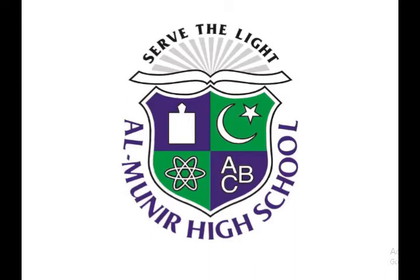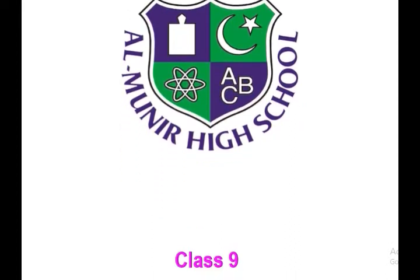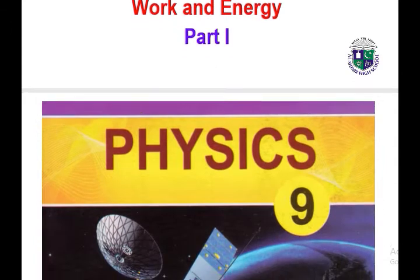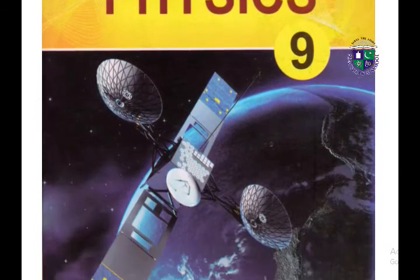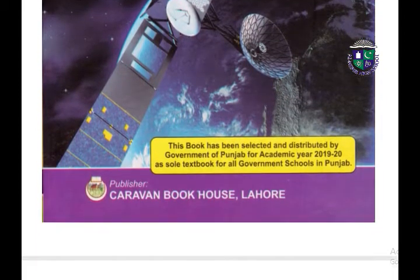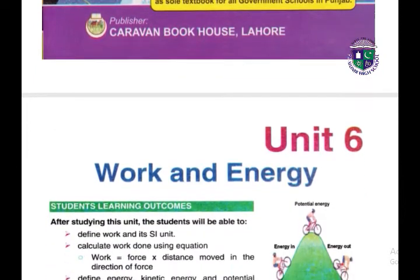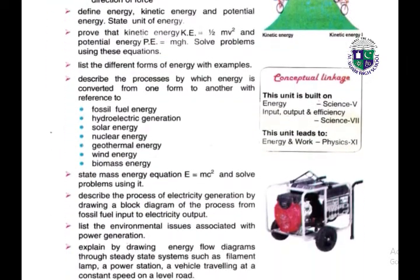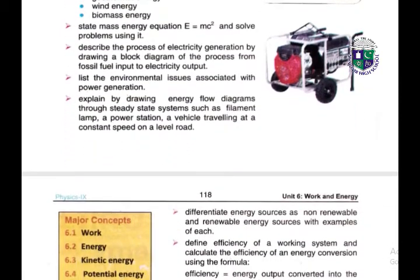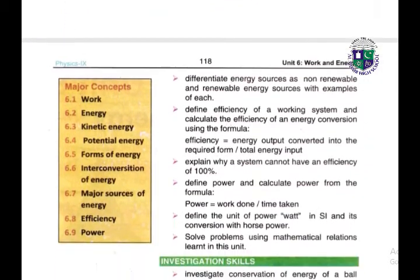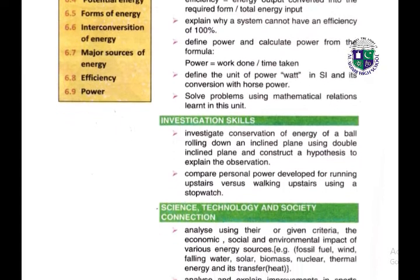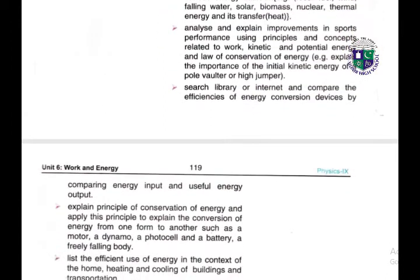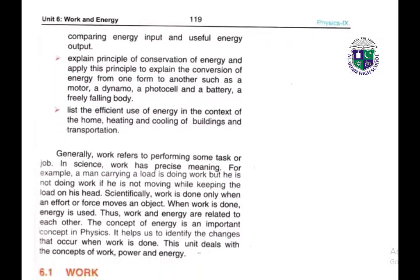Bismillahirrahmanirrahim. Welcome to Al-Muneer i-School e-learning system, Class 9. This is your physics lecture. Today we are going to discuss Unit number 6. In this unit we are going to discuss about work and energy. The main topics we will cover are: work, energy, the main types of energy, other forms of energy, interconversion of energy, major sources of energy, and efficiency and power.